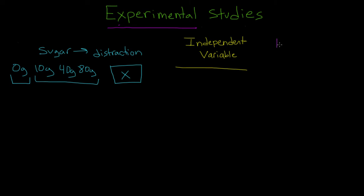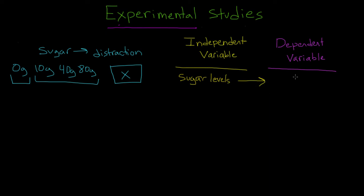And so in this case, distraction would be our dependent variable — the variable that depends on the levels of the independent variable. We have different sugar levels, and we want to see what effect these different sugar levels are going to have on distraction levels. Independent variable and dependent variable are terms you're going to have to become really familiar with, not just because exam questions about them are likely to come up, but also because understanding them will give you a better idea of how to set up experimental studies.